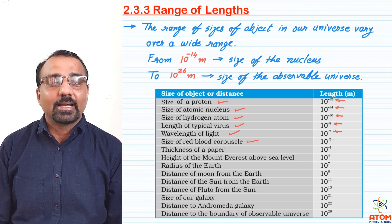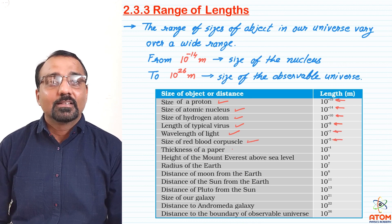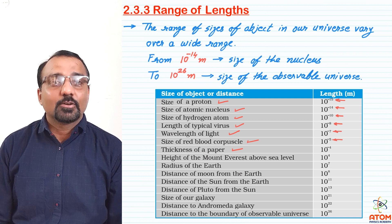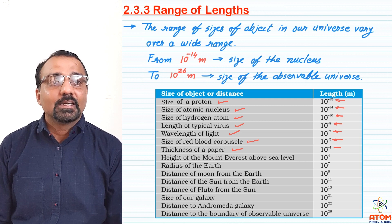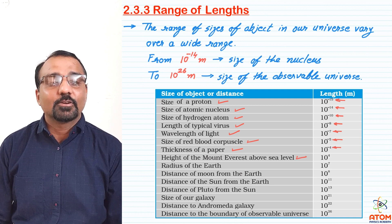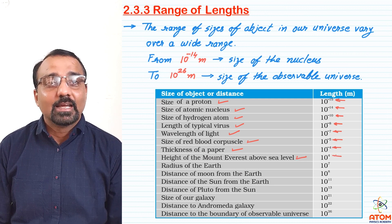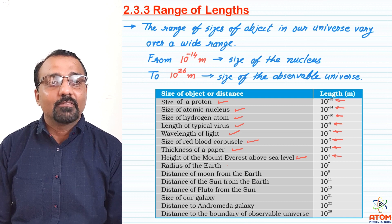The wavelength of light is 10 raise to minus 7 meter. The size of a blood corpuscle is 10 raise to minus 5 meter. The thickness of paper is 10 raise to minus 4 meter. The height of Mount Everest is 10 raise to plus 4 meter.